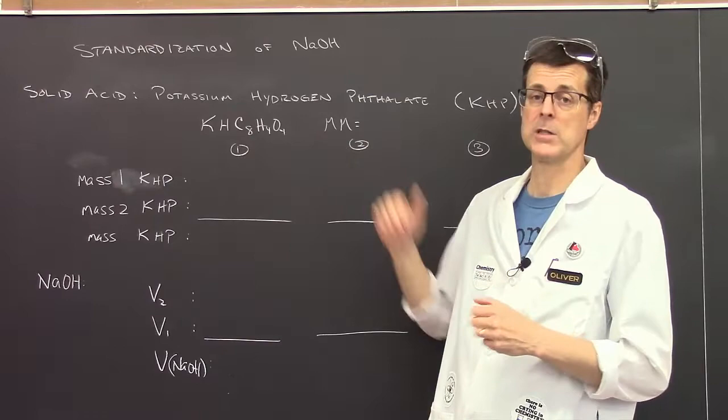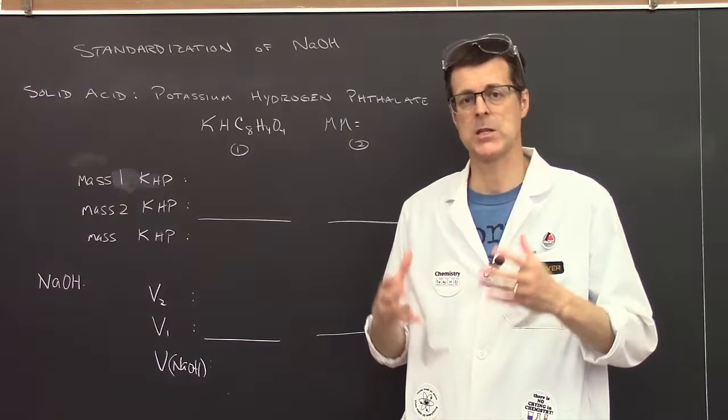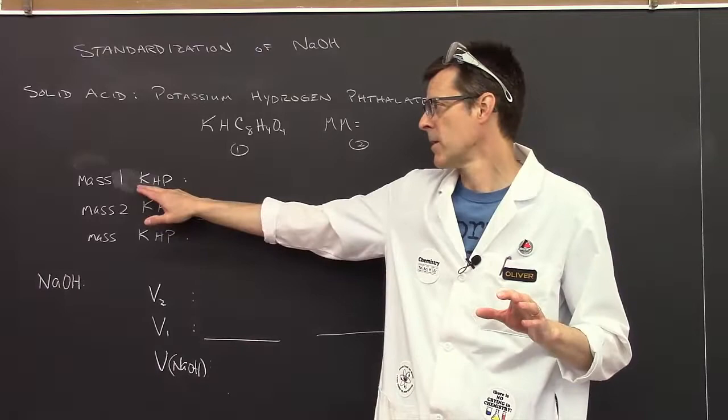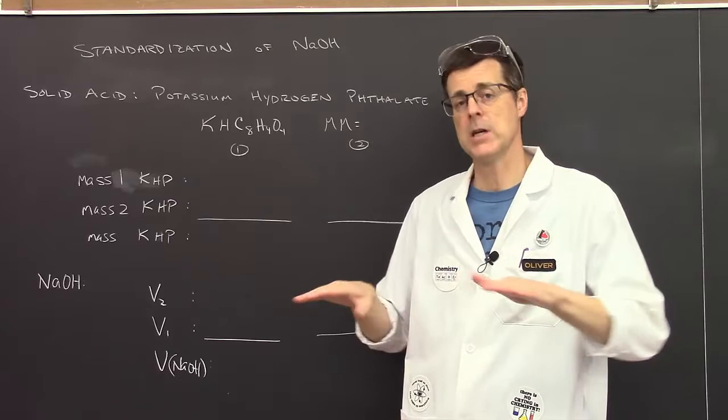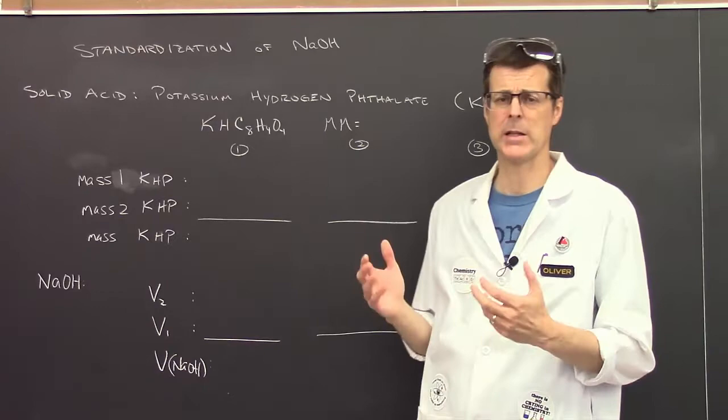We're going to measure out a mass of potassium hydrogen phthalate. I'm going to shorten it to KHP. However, you need to know that while K and H stand for potassium and hydrogen, the P absolutely does not stand for phosphorus—it stands for phthalate, which is a much bigger formula.